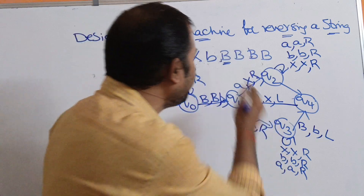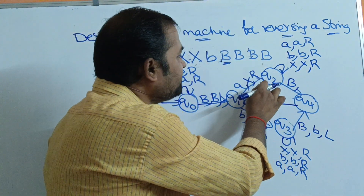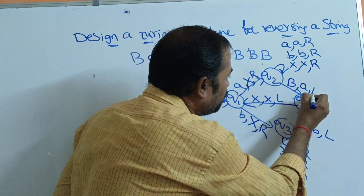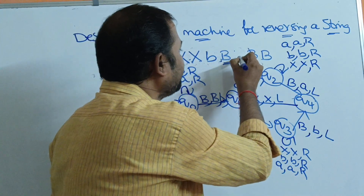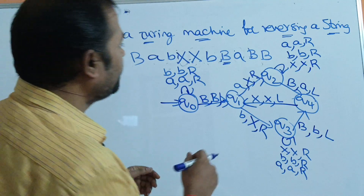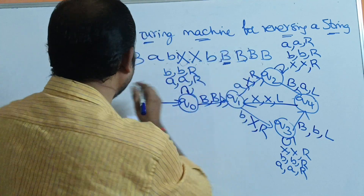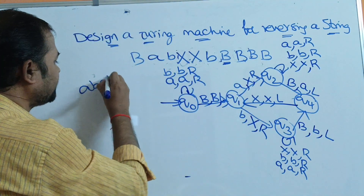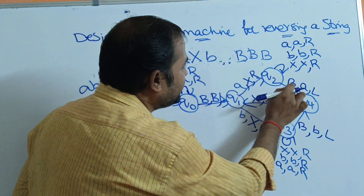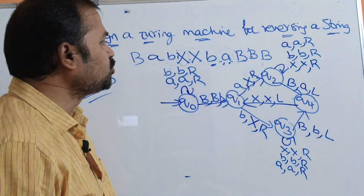If we apply blank on Q2, we replace that blank symbol by A and move the head towards the left. Now this blank symbol is replaced by A. The string is A, B, A, B. So the second blank symbol is replaced with A and move the head towards the left. Now we are at Q4 state.